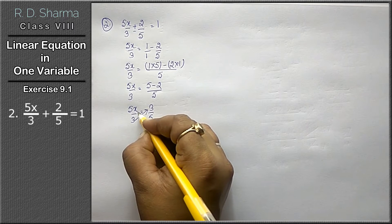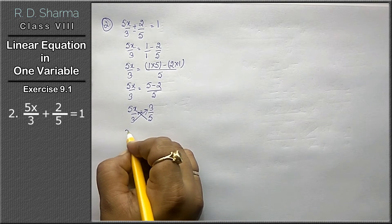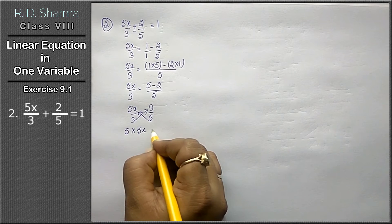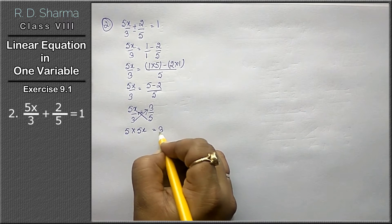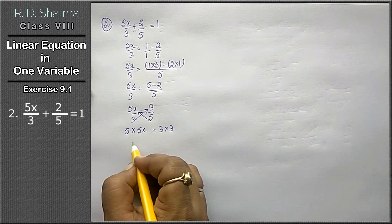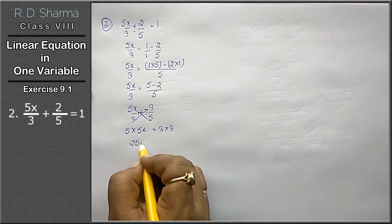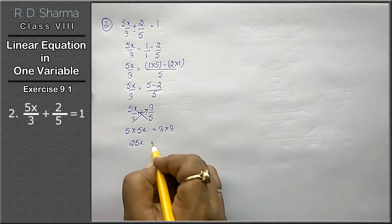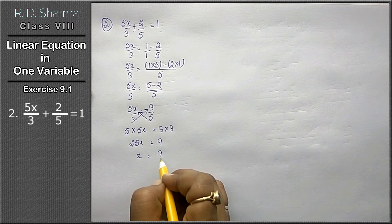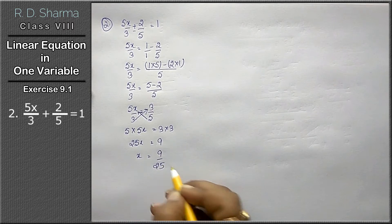Moving across: 5 into 5x equals to 3 into 3, that means 25x equals to 9, so x equals to 9 by 25. That is the answer.